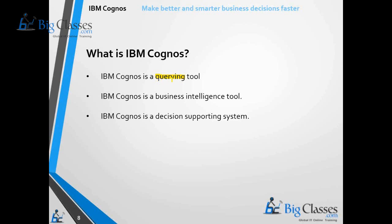Another beauty of Cognos is that we can accommodate heterogeneous databases in a single query. For example, take the Oracle sample tables: the employee table is in Oracle and the department table is in DB2. Normally it is not possible to write a single query joining those two tables across Oracle and DB2 — but using Cognos, we can write a single SELECT statement spanning both databases, and Cognos manages internally how the query needs to be fired.